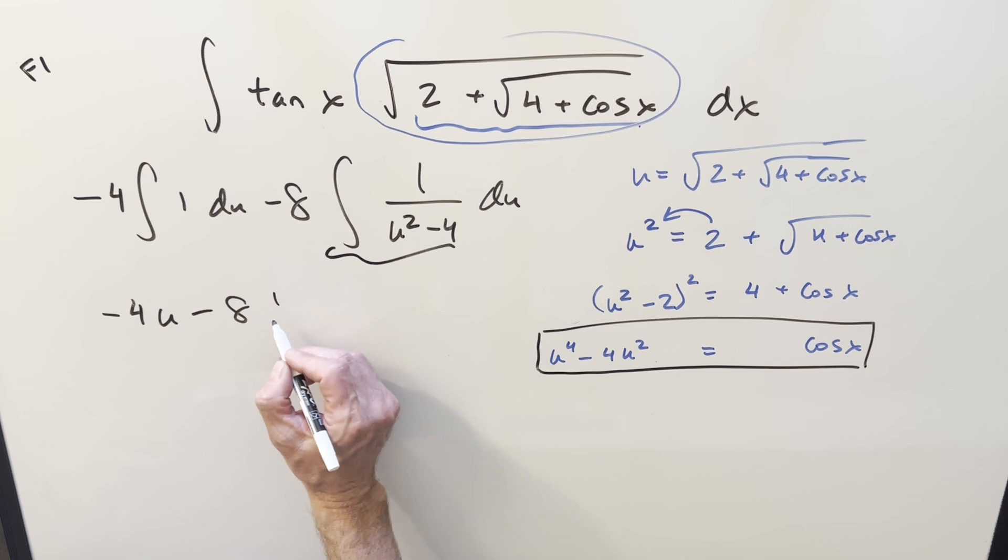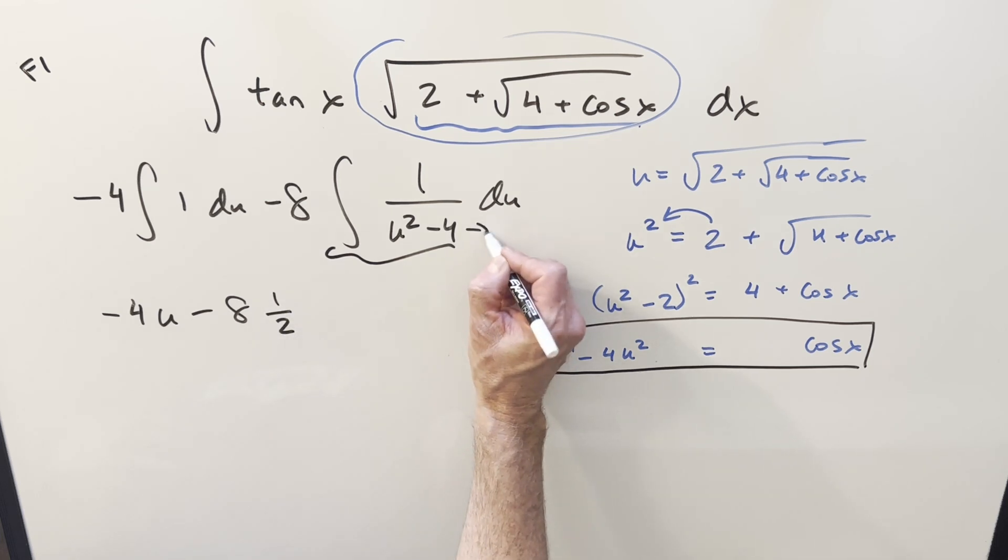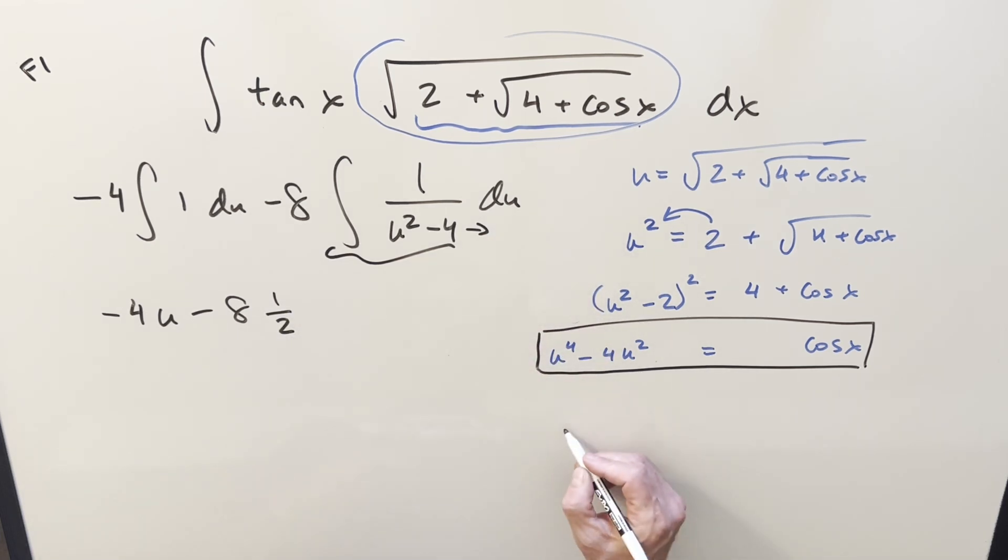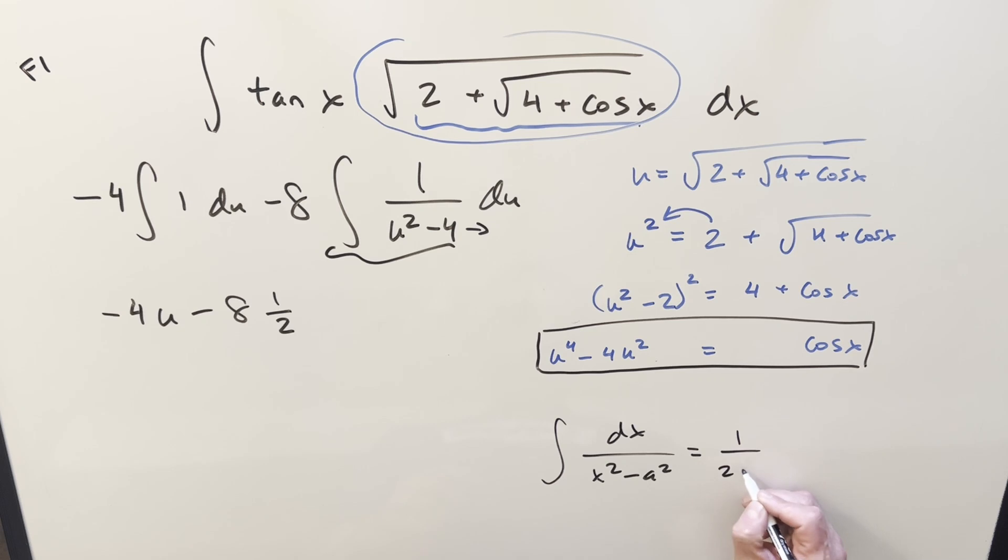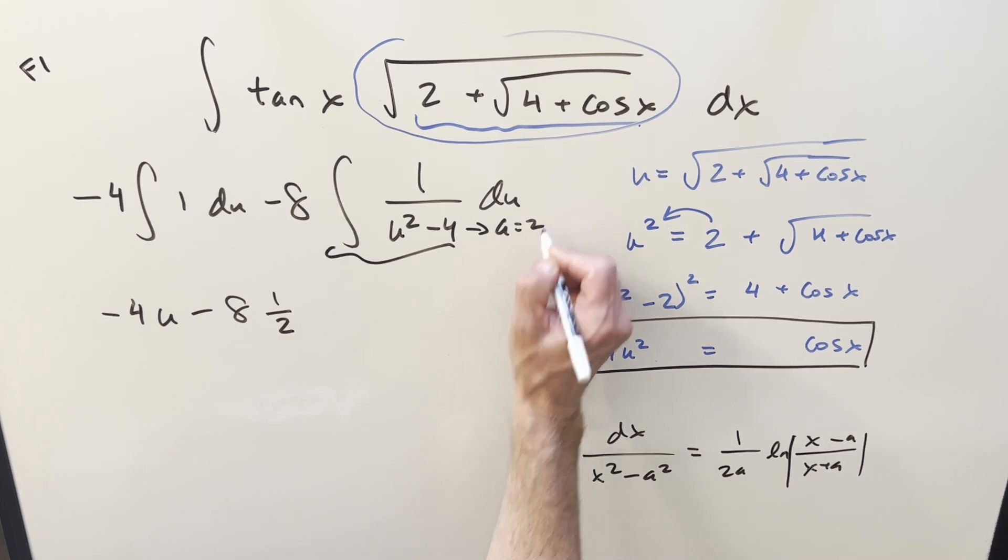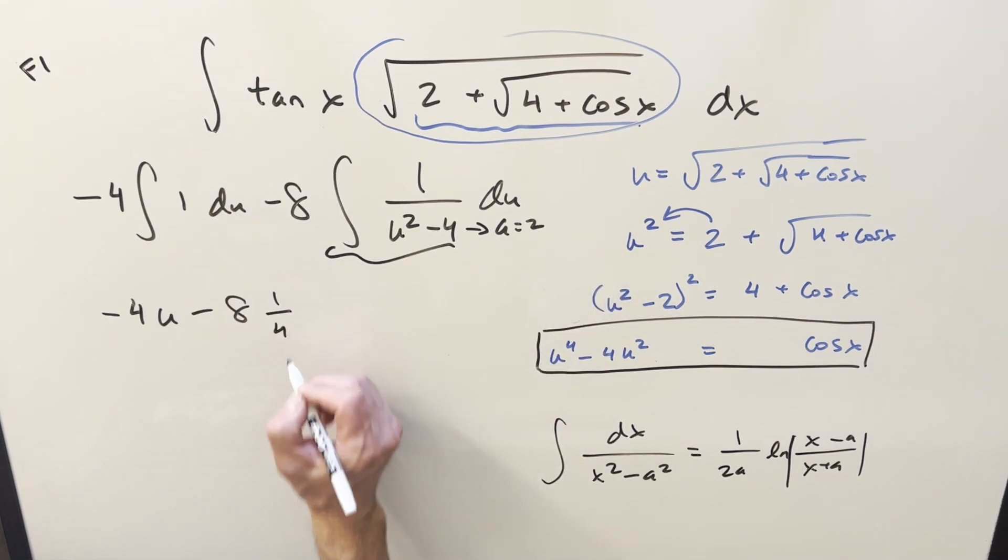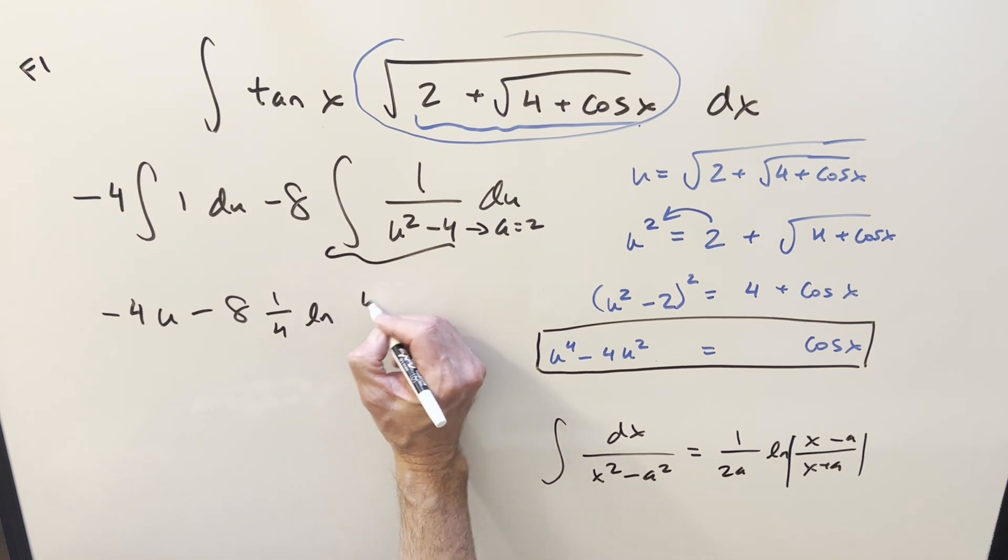So using the formula for this, we're going to have one half in front. Let me just show the formula for this kind of integral over here to the side. So we have integral 1 over x squared minus a squared dx. This thing is going to be 1 over 2a natural log x minus a over x plus a. And I think technically there's absolute value. So going to this formula, 1 over 2a, where our a value is going to be 2, this is actually going to become 1 fourth right here.